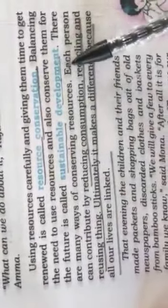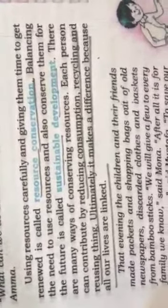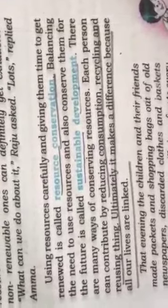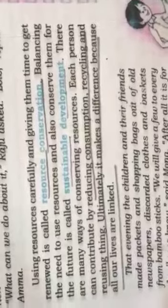Balancing the need to use resources and conserve them for future use is called sustainable development. Given in the glossary also, it means carefully utilizing resources so that besides meeting present requirements, we also take care of future generations. We have to think not only about present needs but also about future use.